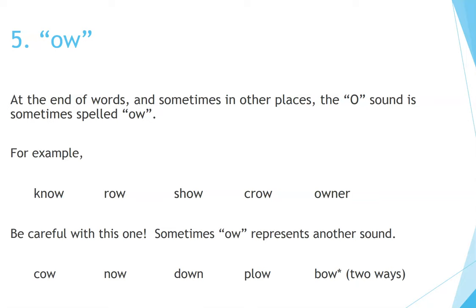Number 5: OW. At the end of words, and sometimes in other places, the O sound is sometimes spelled OW. For example: Know, Row, Show, Crow, Owner. Be careful with this one — sometimes OW represents another sound: Cow, Now, Down, Plow, Bow. There are two ways to pronounce the word 'bow.'